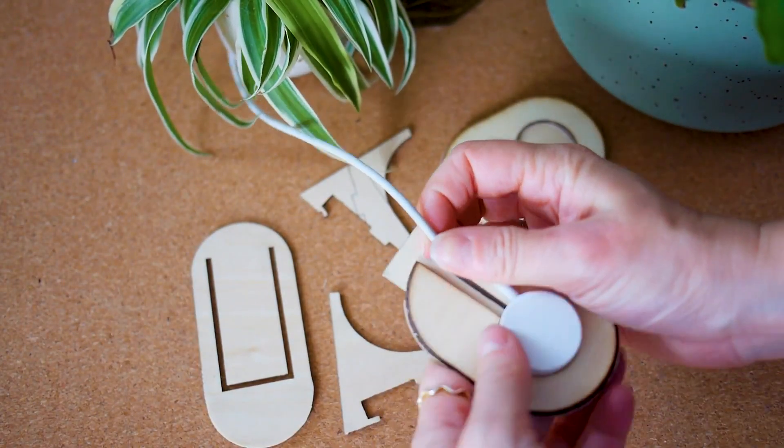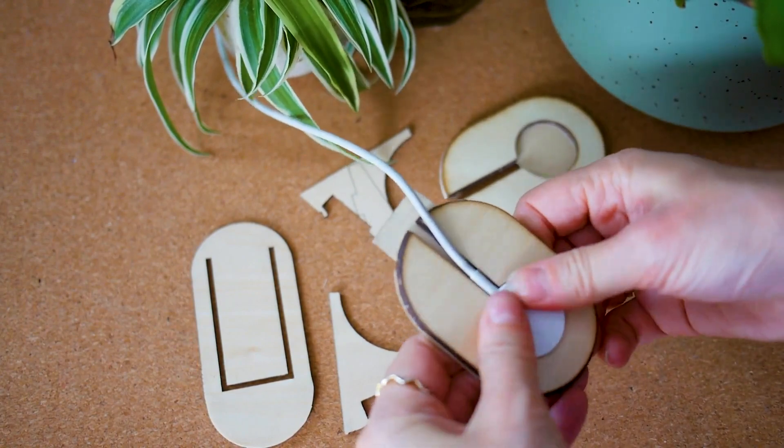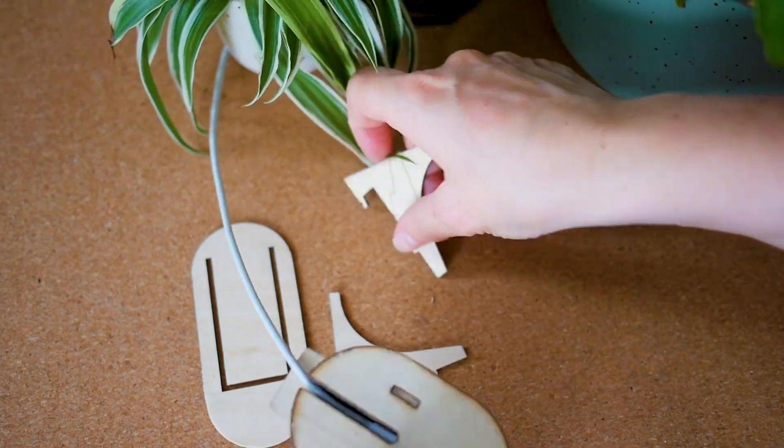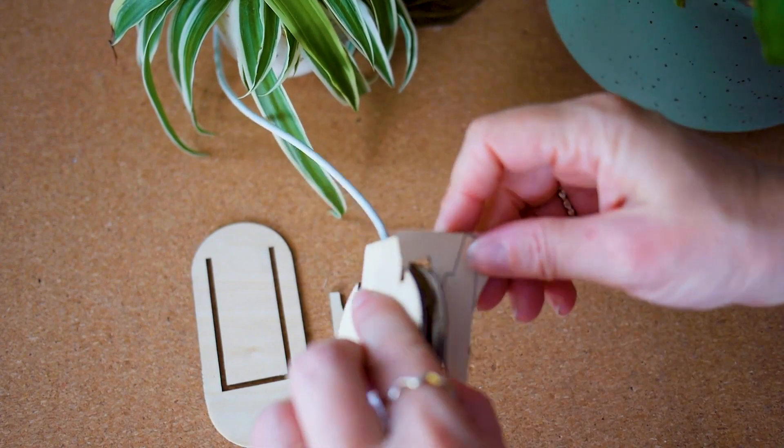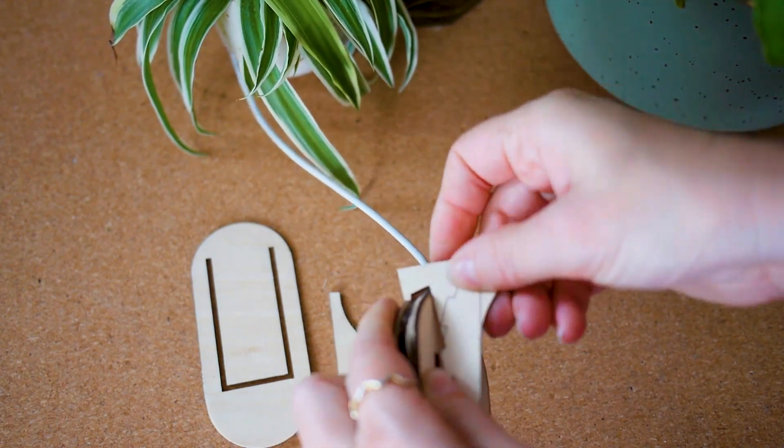You can put the charger in the front part and let the wire through the middle cut. And then you can close this kind of sandwich with the little feet.